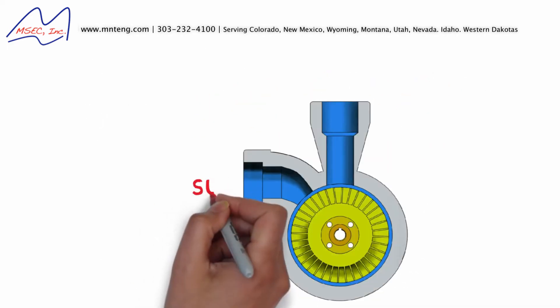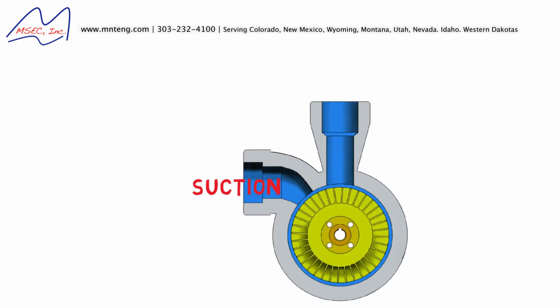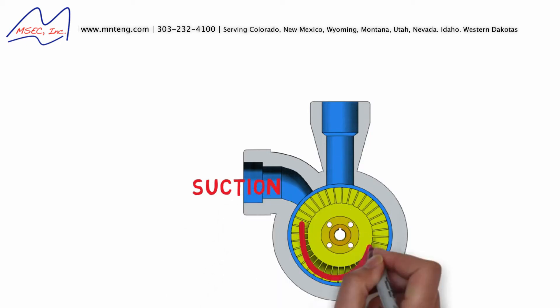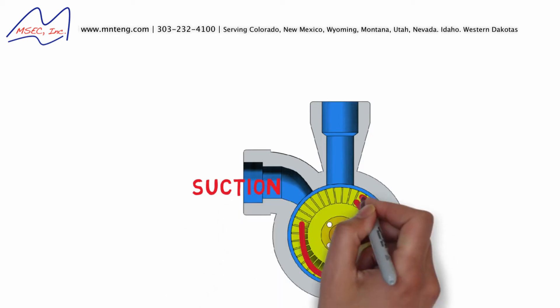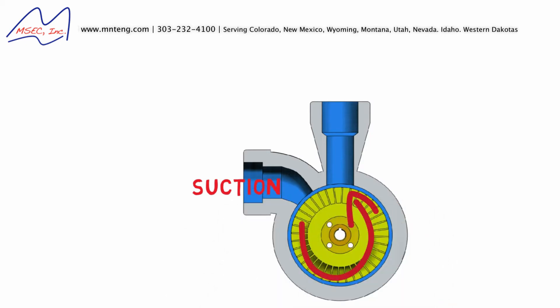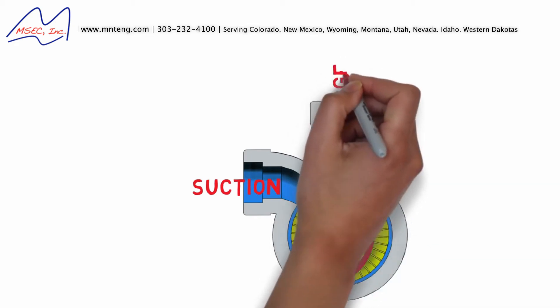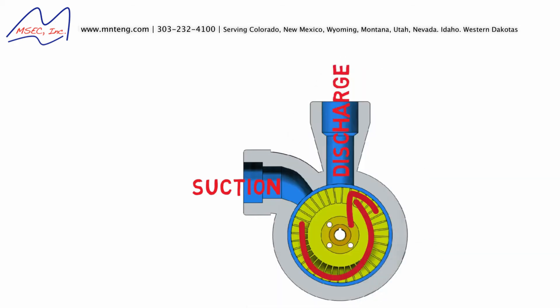On the suction side, liquid is gathered by the impeller's veins. After making only one revolution in the annular channel, the fluid has a high velocity that sends the liquid out the discharge.